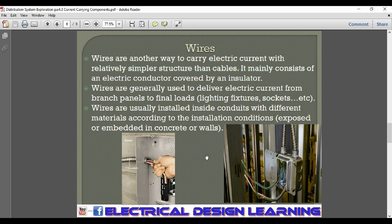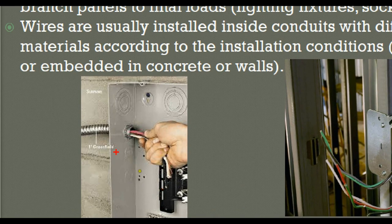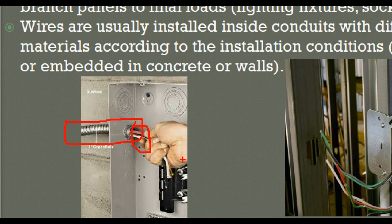Wires are generally used to deliver electric current from branch panels to final loads, like lighting fixtures, sockets, and HVAC. Wires are usually installed inside conduits made with different materials according to installation conditions — whether exposed or embedded in concrete or walls. These figures show wires installed inside a conduit and entering the connection box.